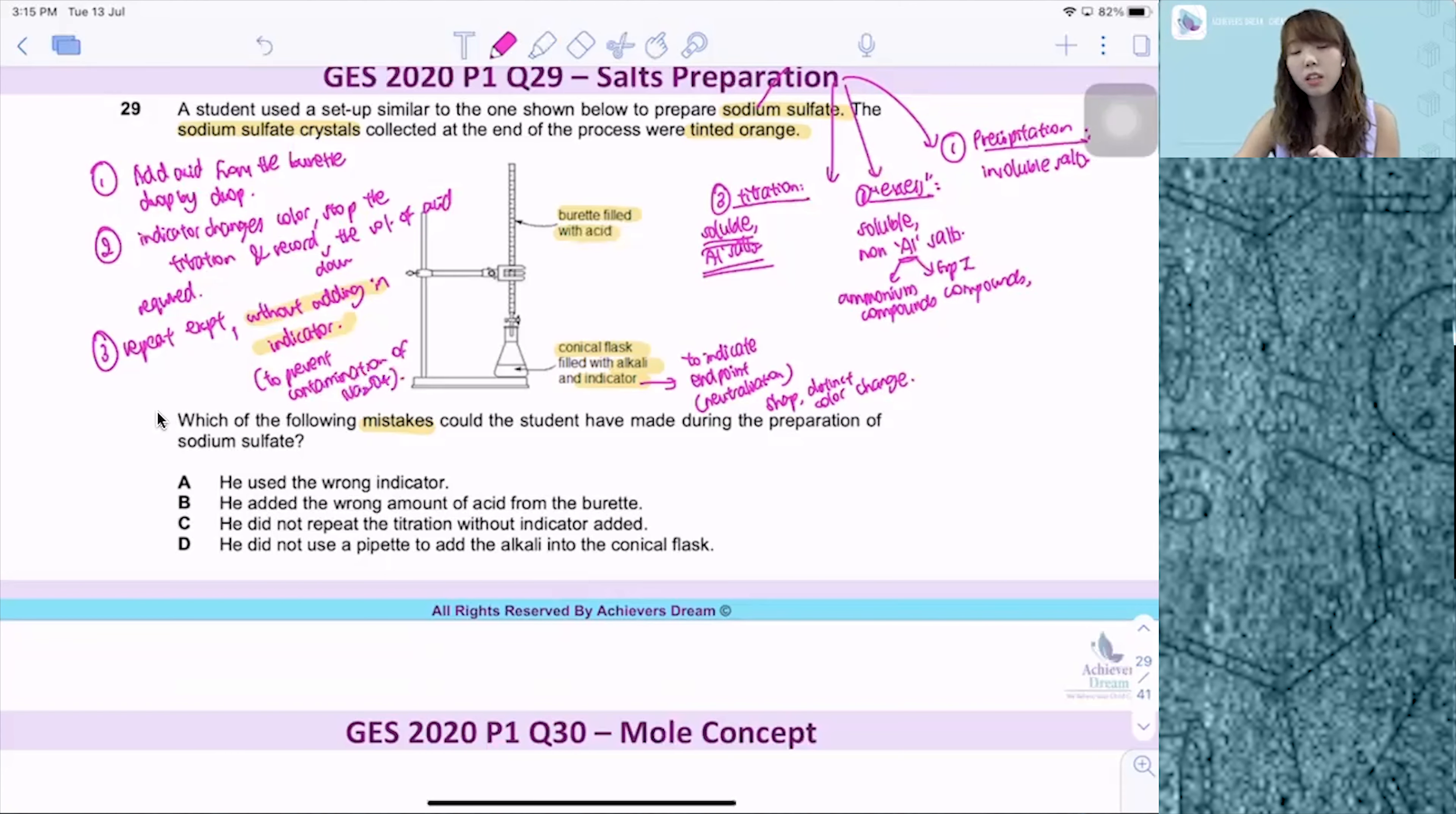So the mistake that the student has made during this preparation is that he did not repeat the titration without adding in the indicator. So he used the first experiment whereby he added in the indicator. That's why the crystals that were collected were tinted orange with the indicator. So this is not a pure sodium sulfate crystal. So it is a contaminated one. So answer for question 29 is option C.